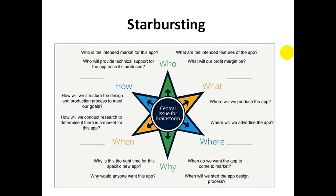Star bursting is a related technique. At the center is the main idea, and around it are the questions: who, what, where, why, when, and how. For example: Who is the intended market for the application? Who will provide technical support once it is produced? What are the intended features of the application? What will our profit margin be? Where will we produce the app? Where will we advertise the app?